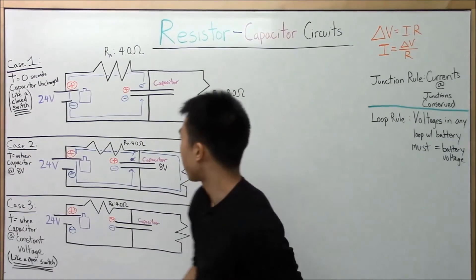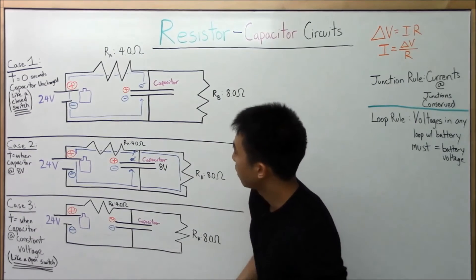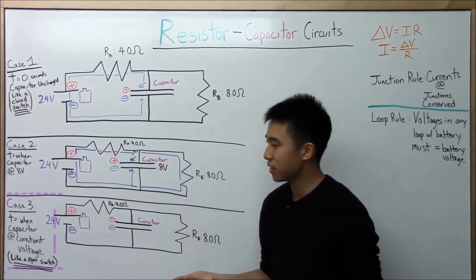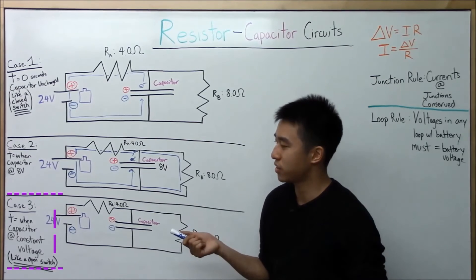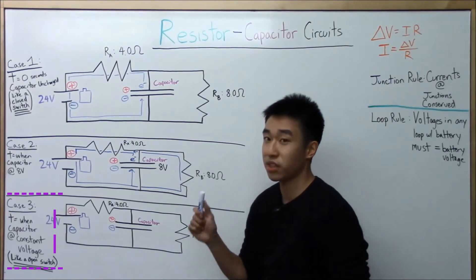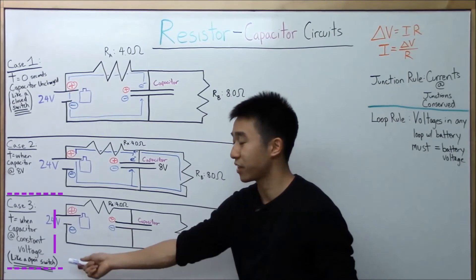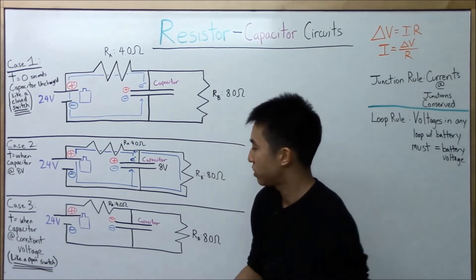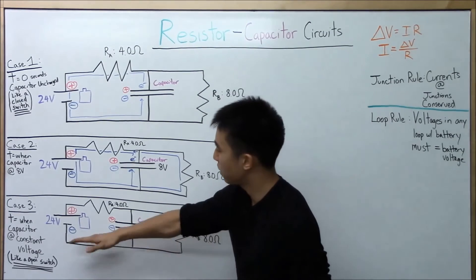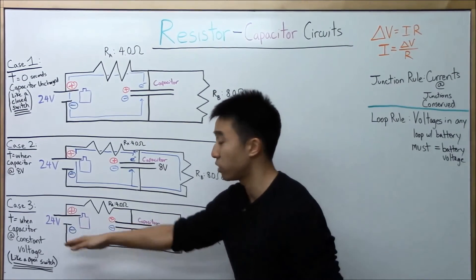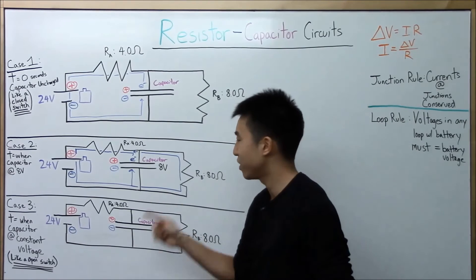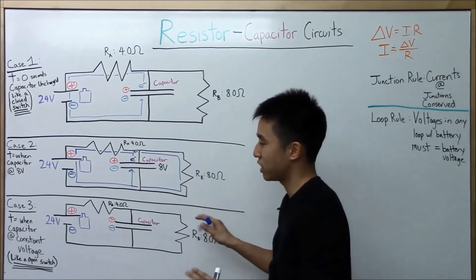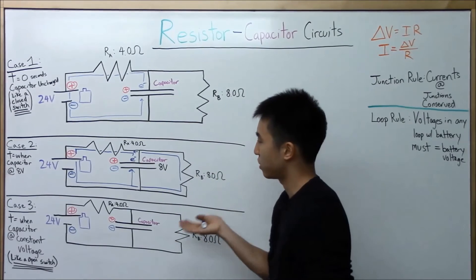So that's the electron flow for Case 2. Down here is Case 3 — the time when the capacitor is at constant voltage. Professor Duffy gives a great hint: it's like an open switch. If the switch is open, there's no electron flow through the capacitor, because it's maximally charged. The battery can't force any more electrons to go from the positive plate to the negative plate, and it's charged at some unknown voltage.